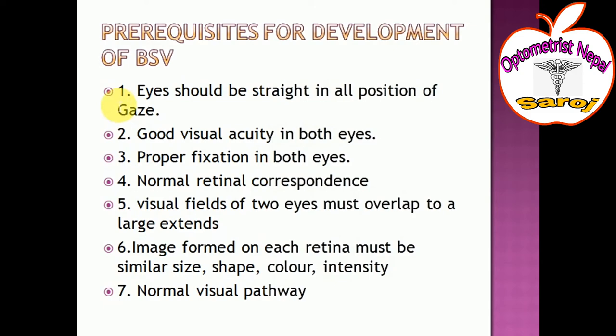Prerequisites for development of binocular single vision: the first prerequisite is that both eyes should be straight in all positions of gaze. For binocular single vision to develop, both eyes must be aligned so that their visual axes are straight — at that condition, binocular single vision is well developed.